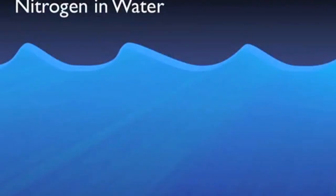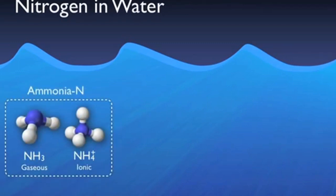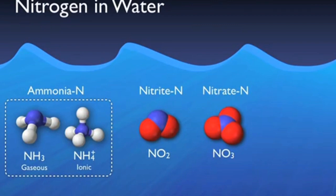Nitrogen is present in wastewater in various forms which have been lumped into separate general categories. Nitrogen in the form of ammonia is ammonia nitrogen. There is also nitrite nitrogen and nitrate nitrogen, which are usually formed during the actual biological processes at the wastewater treatment plant. In addition to these forms, nitrogen makes up a small percentage of the cell mass of the organisms in the system, as well as other dissolved organic compounds.